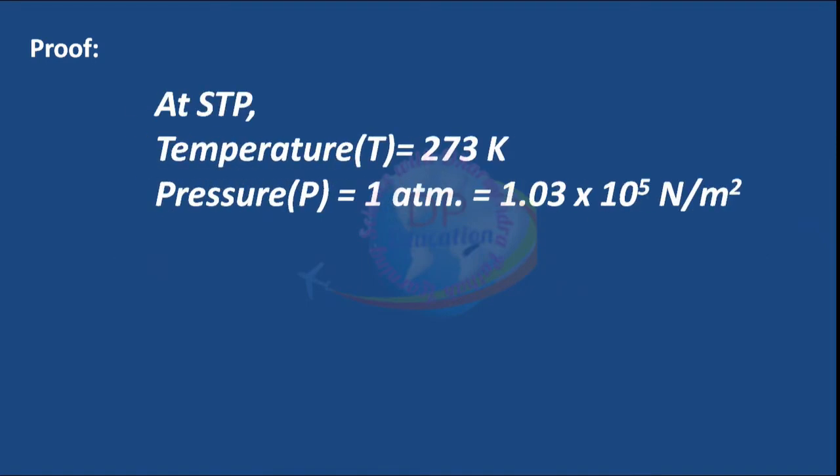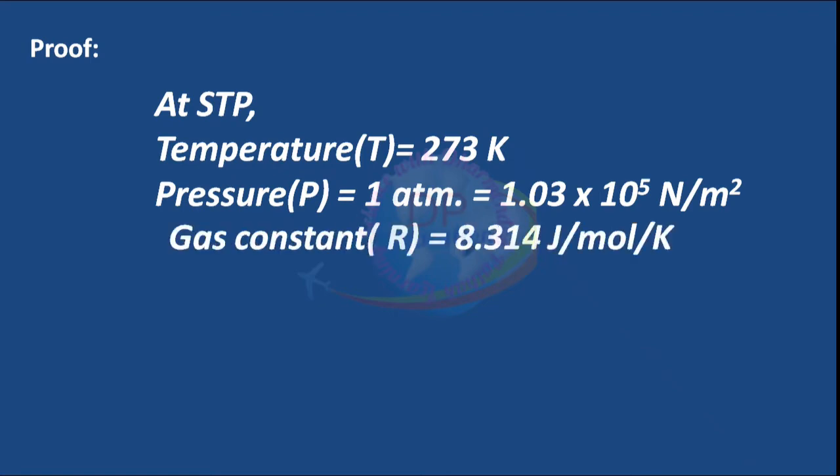At STP, temperature T equals 273 Kelvin, pressure P equals 1 atmospheric pressure which equals 1.03 times 10 to the power 5 newton per meter squared. Gas constant R equals 8.314 joule per mole per Kelvin.